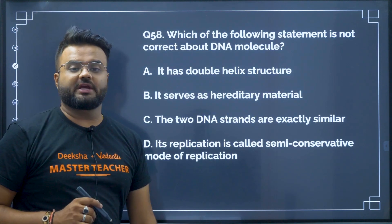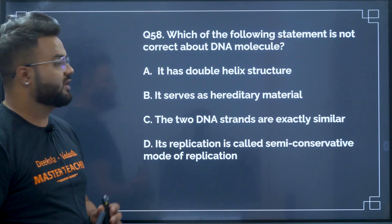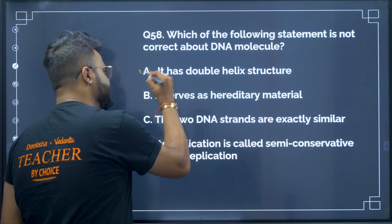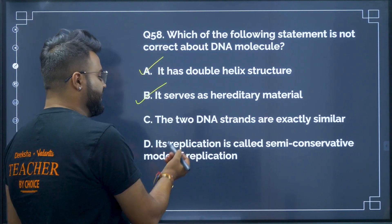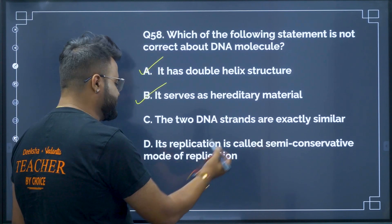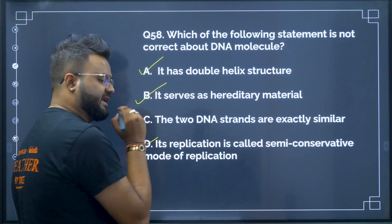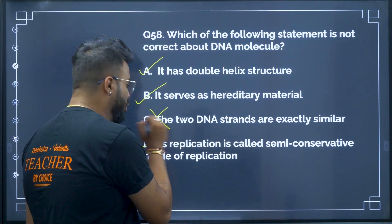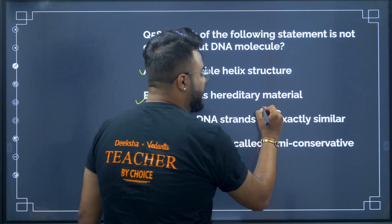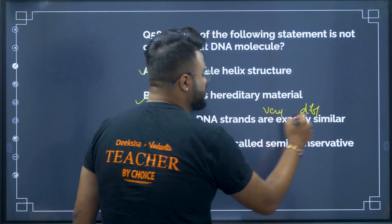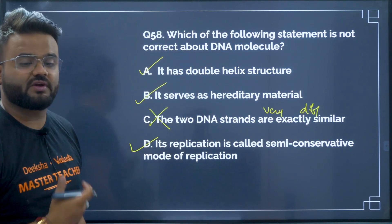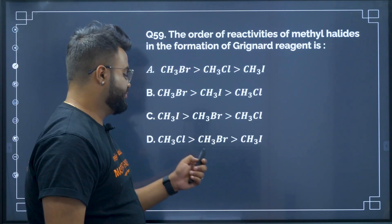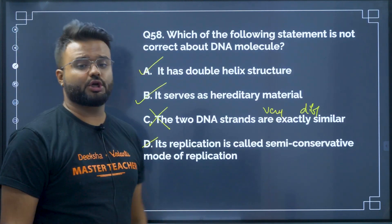Question number 58: which statement is not correct about the DNA molecule? It has a double helix structure — correct. It serves as hereditary material — yes. Its replication is called semi-conservative mode — exactly. However, the two strands of DNA are not exactly similar — they are complementary but different, containing two different nucleic acid sequences. Therefore option C will be your correct answer.